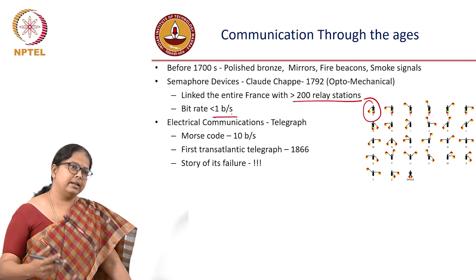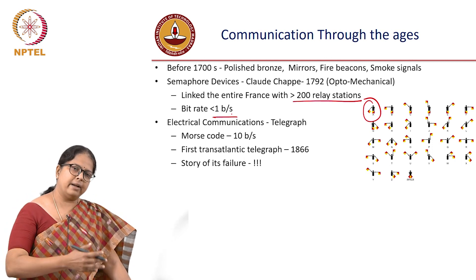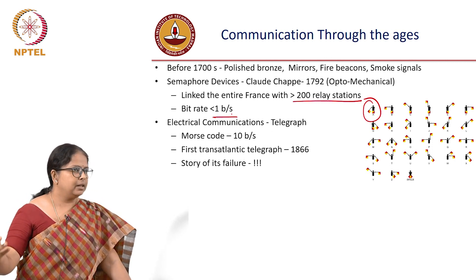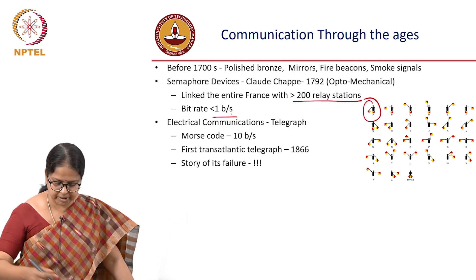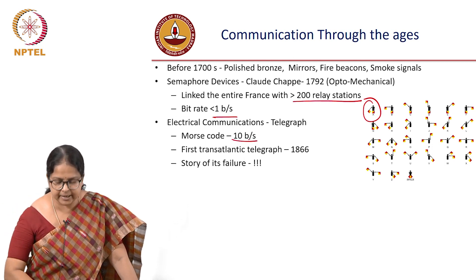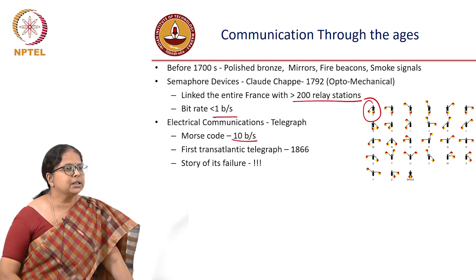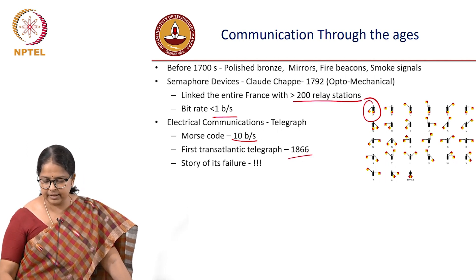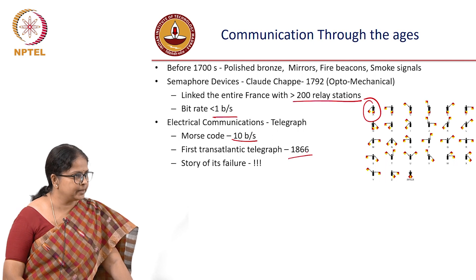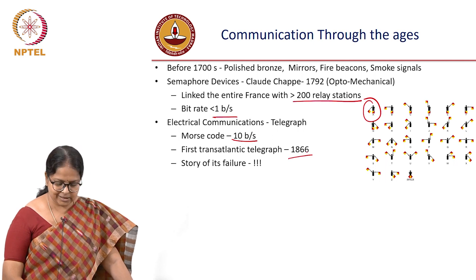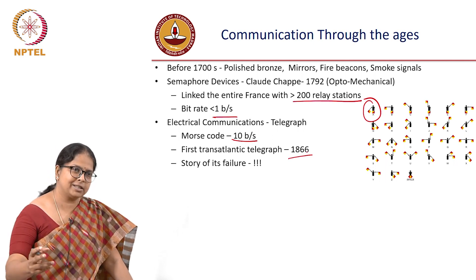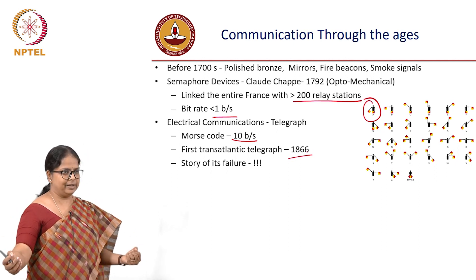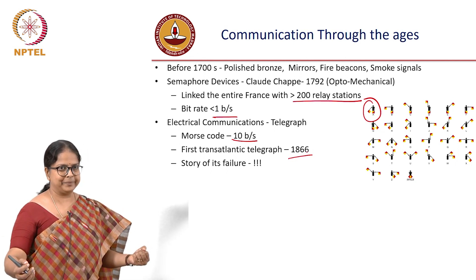Morse code was developed, similar to semaphore — dots and dashes representing different alphabets. The typical rate was 10 bits per second. The first transatlantic telegraph was set up in 1866. The very first time they tried to establish the link, however, it was a big failure for a long time.